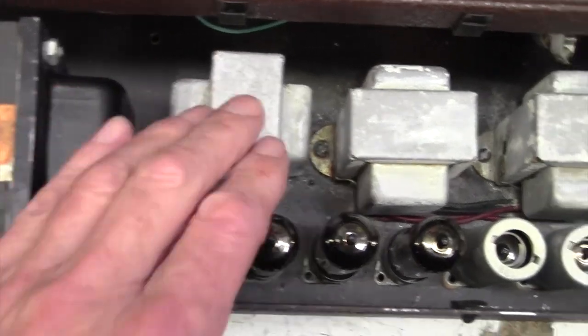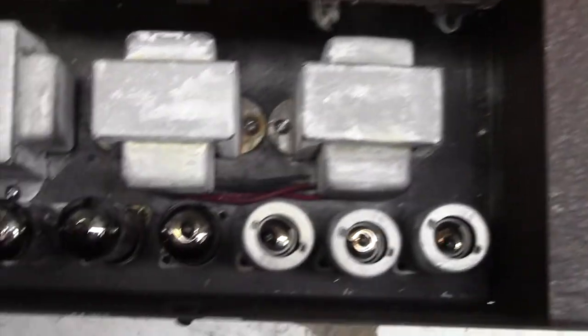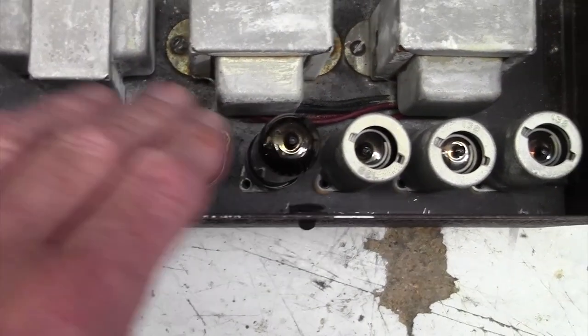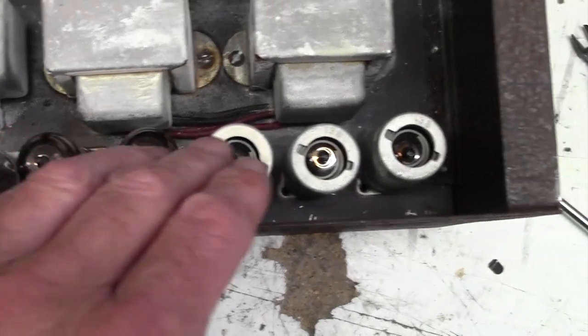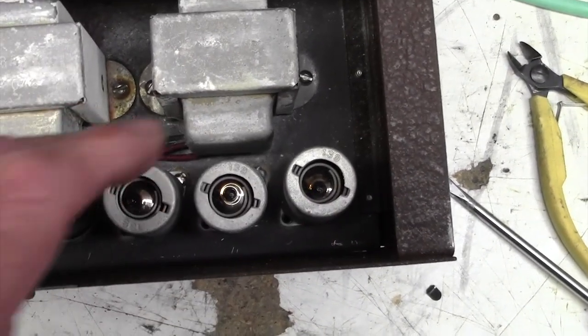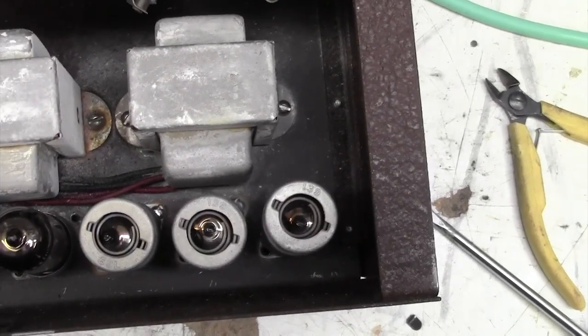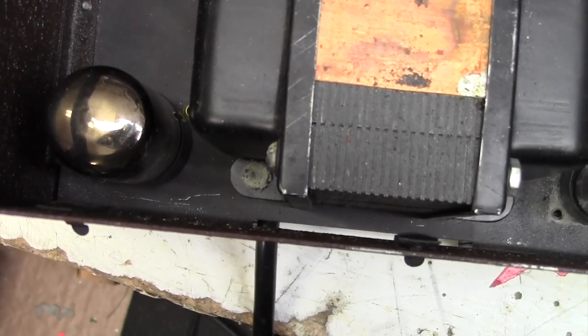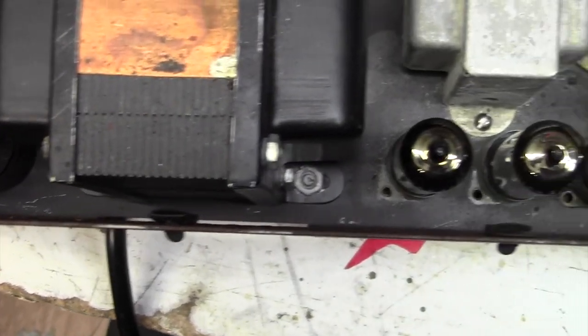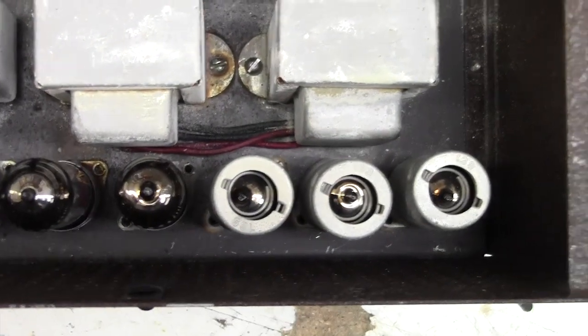So my guess is mains transformer, choke, two output transformers, and then a pair of EL84s per output transformer. I'm not quite sure how they're doing the preamp side of things here. Maybe they're using one and a half of these each to do the channel preamps. Not sure. And it's got a rectifier diode in there as well. Rectifier valve. OK, well let's just spin it over and have a look on the underside, at the component side, and see what's going on there.